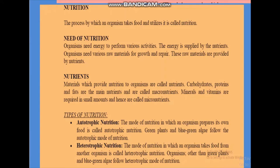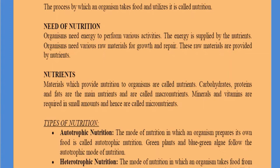What are nutrients? Materials which provide nutrition to organisms are called nutrients. The food we consume is made up of carbohydrates, proteins, fats, vitamins, and minerals — these are the components of food, i.e., nutrients. Carbohydrates, proteins, and fats are the main nutrients needed in larger quantities, so they are called macronutrients. Minerals and vitamins are required in small amounts, so they are called micronutrients.